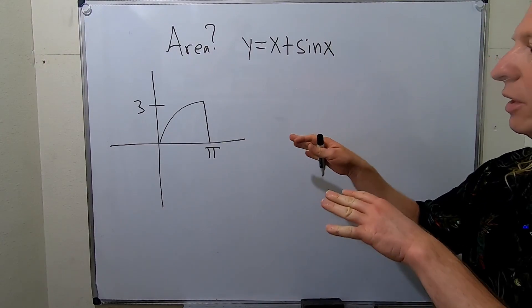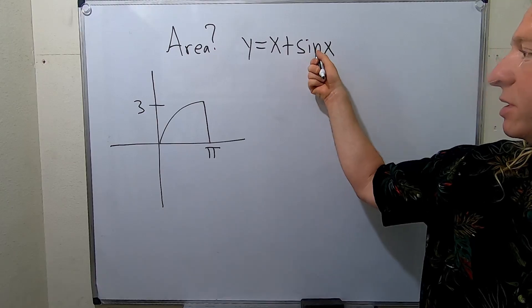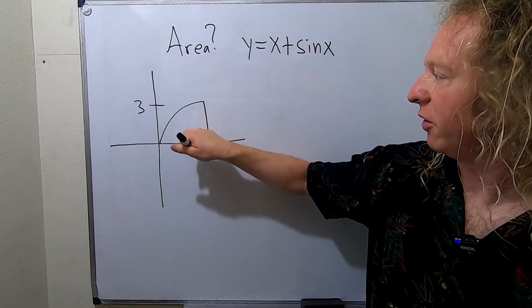In this video we're going to find the area given in this picture. This is the graph of x plus sine x and we're restricting the domain from zero to pi. So we're looking for this area here.